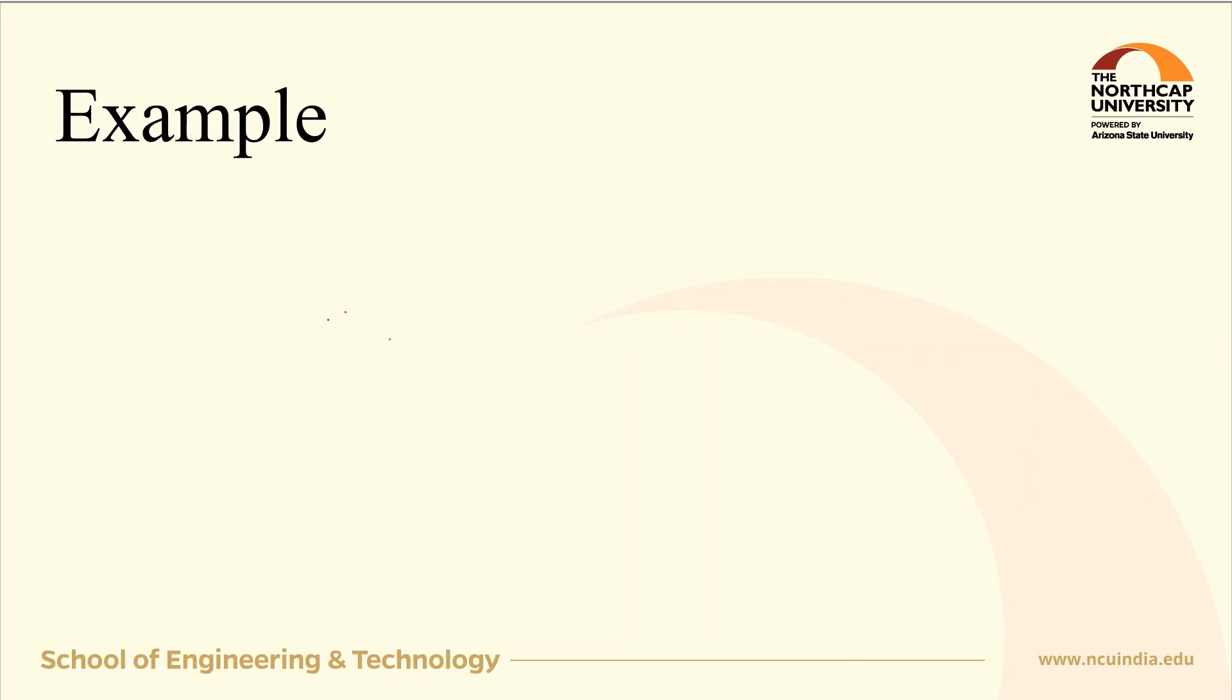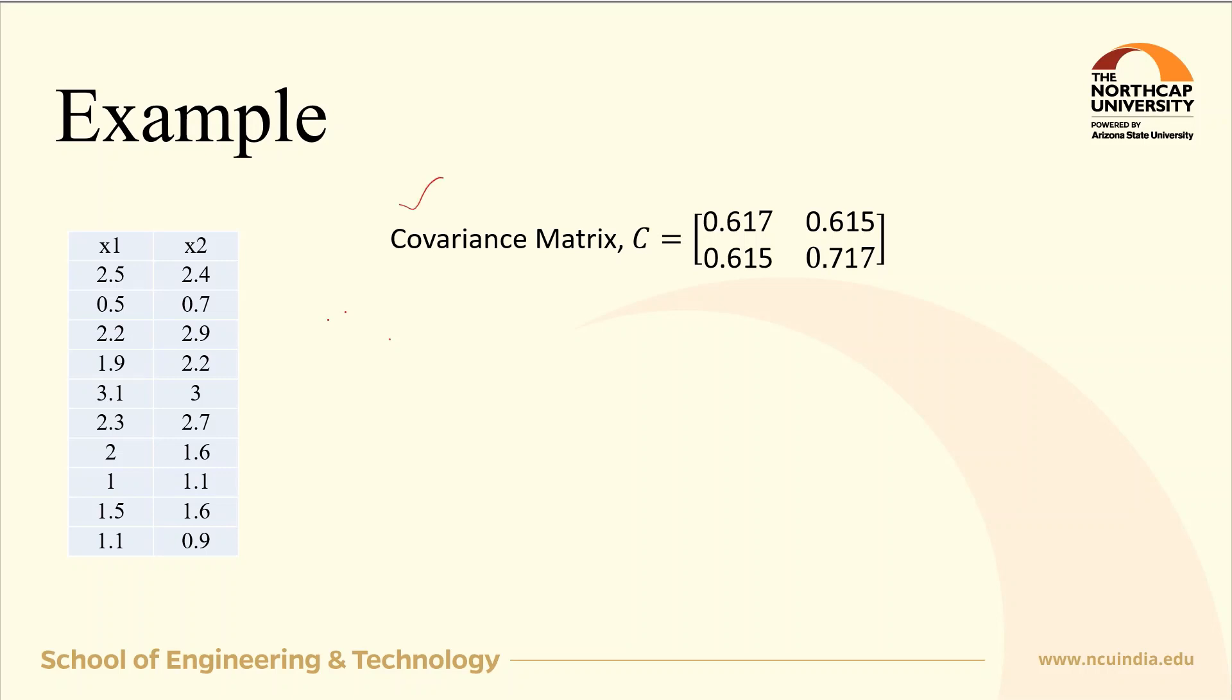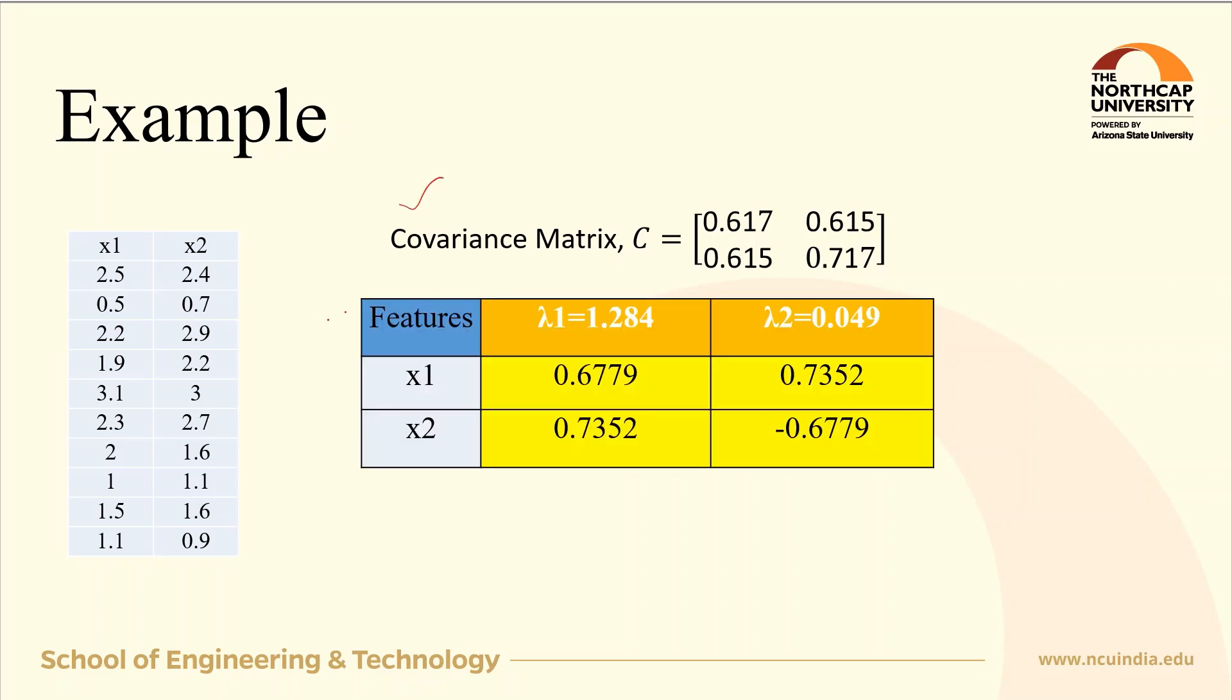Now, let us take the same example of a two-dimensional data set for which we had already calculated the covariance matrix. For this covariance matrix, two eigenvalues and two eigenvectors were calculated, and after sorting these eigenvalues, lambda 1 and lambda 2, the feature vector is represented like this.